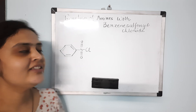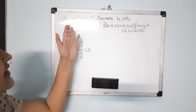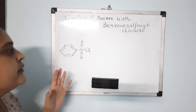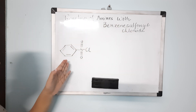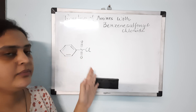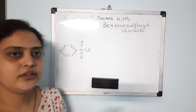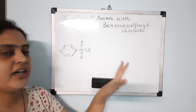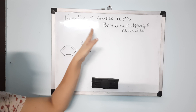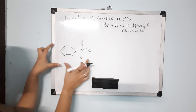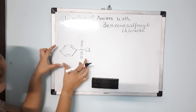Today we'll start the topic: reaction of amines with benzene sulfonyl chloride. This molecule — benzene sulfonyl chloride — when it reacts with primary, secondary, or tertiary amines, gives different products that help characterize and differentiate between the three types of amines. Let us see how.